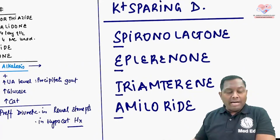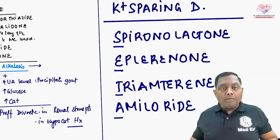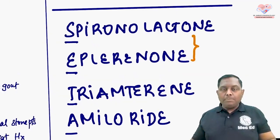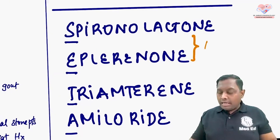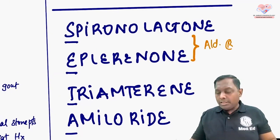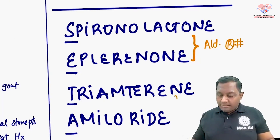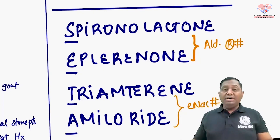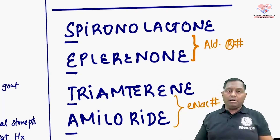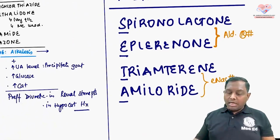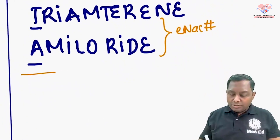Spironolactone and eplerenone are aldosterone receptor blockers, while triamterene and amiloride are epithelial sodium channel (ENaC) blockers.